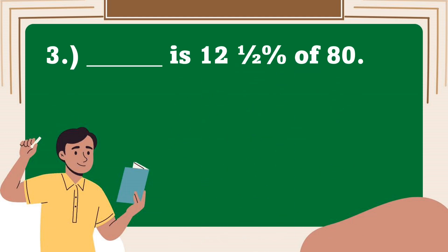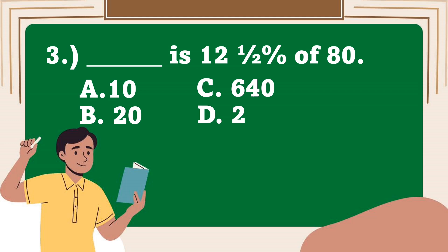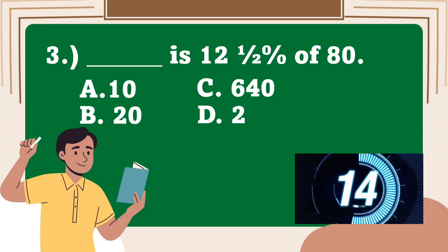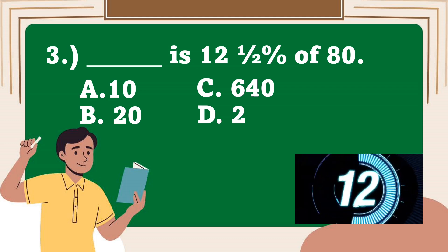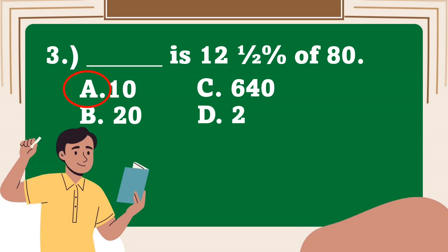Number 3. Blank is 12.5% of 80. A. 10, B. 20, C. 640, D. 2. Your timer starts now! The correct answer is A. 10.